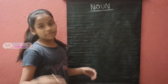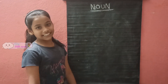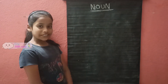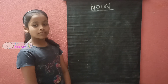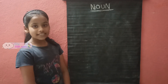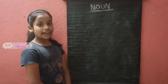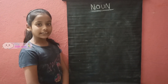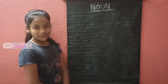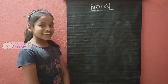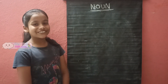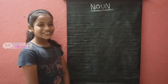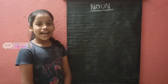Hello everyone, welcome back to my channel, Siri with Mom. Today I am explaining noun. Noun has four types. First one: person. Second one: thing. Third one: place. Fourth one: animals.